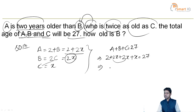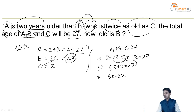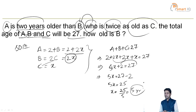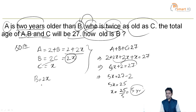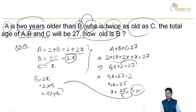Simplifying: 2 plus 5X equals 27, so 5X equals 25, giving X equals 5. The question asks how old is B. The value of B is 2X, that is 2 into 5, which equals 10. So the present age of B is 10 years.